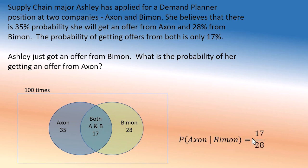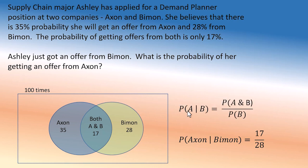The probability of Exxon given Biman is 17 out of 28. And if you love formulas, here it is: conditional probability — A given B equals A and B divided by B. This is A and B, and this is our B. That's it.